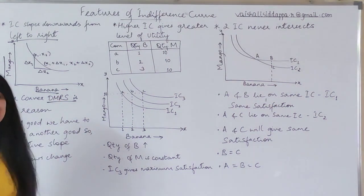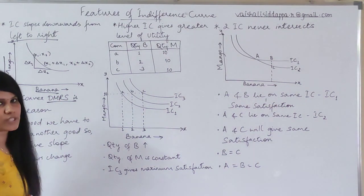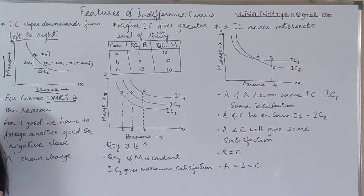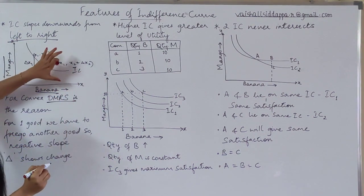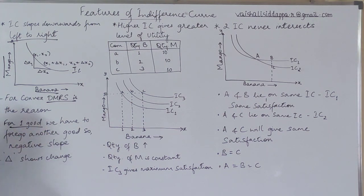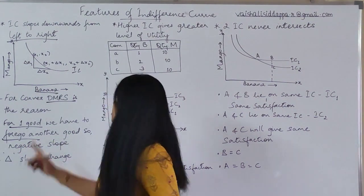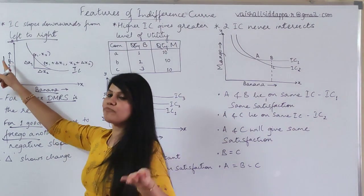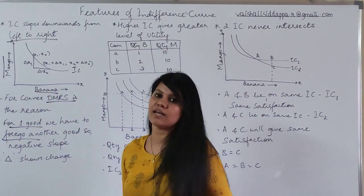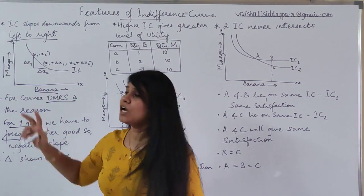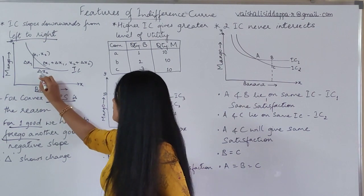To understand exactly what diminishing marginal rate of substitution is, you have to see my previous videos. The curve shape is exactly convex to the origin. That means, simply, if you want to purchase one good, you have to forgo another good. If you want to purchase more bananas, you have to sacrifice mango. If you want more mango, you have to sacrifice banana, because you have limited money and limited resources. In this case, both goods will be changing.